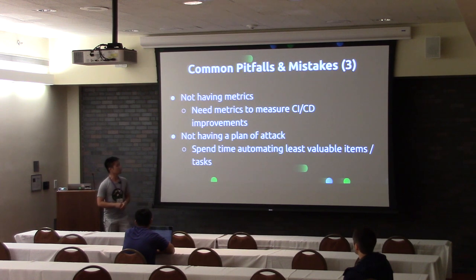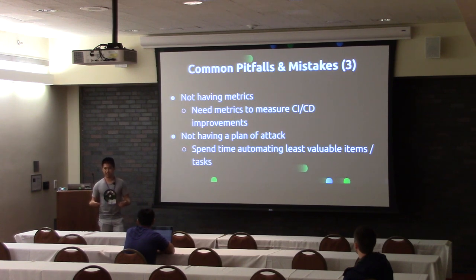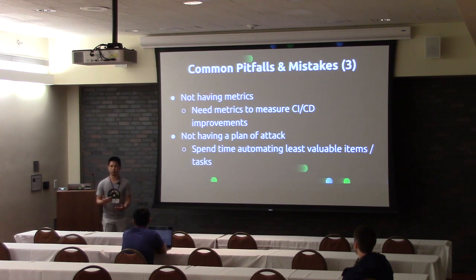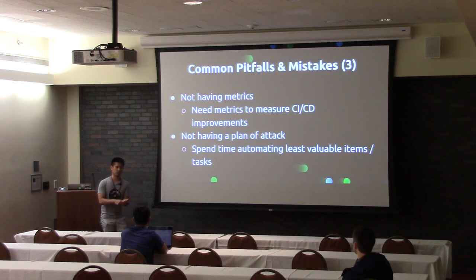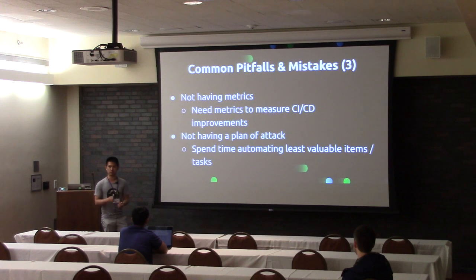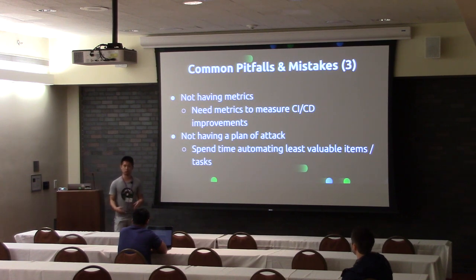Another pitfall is not having metrics. In order to derive true value from adopting any tool in your tool chain, you have to have metrics to figure out whether you're really gaining value. Different companies will have different metrics — it could be number of releases per sprint, number of commits, number of issues crossed off on Jira. You need to figure out what those metrics are and compare them before and after adoption of new tools to decide if it improved your team's productivity and was worth the money.